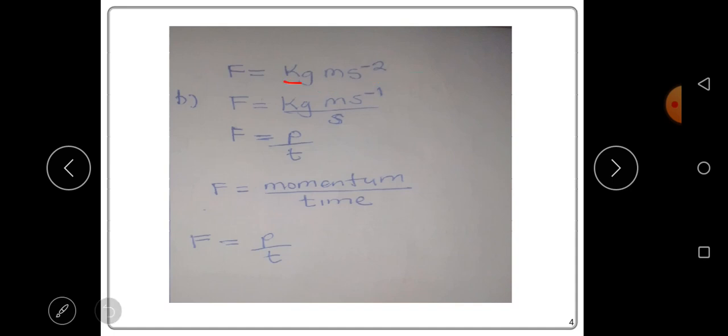So, these units can be written as kg meter second to the power negative 1 over S. It's just the same. So, you can realize that from the units we've been given in the equation, the units here on top represents momentum.